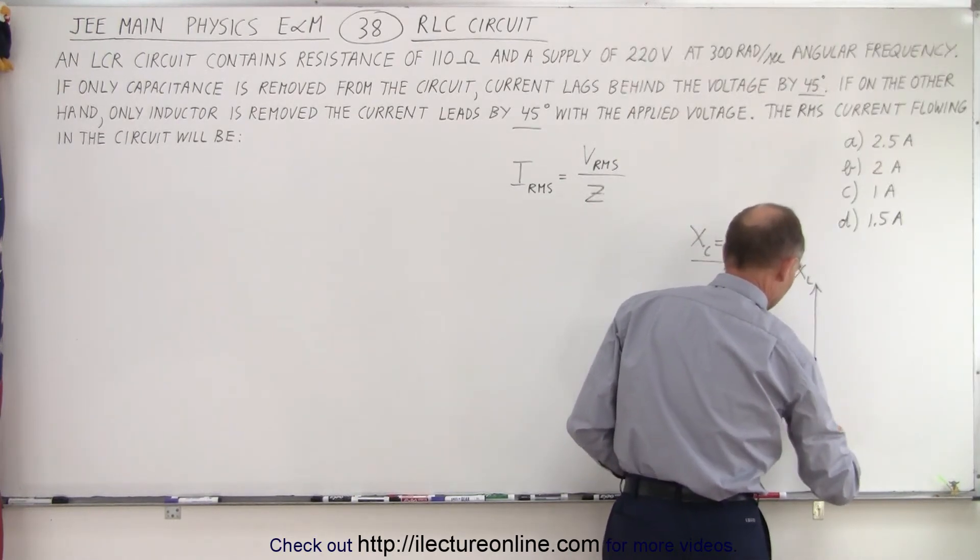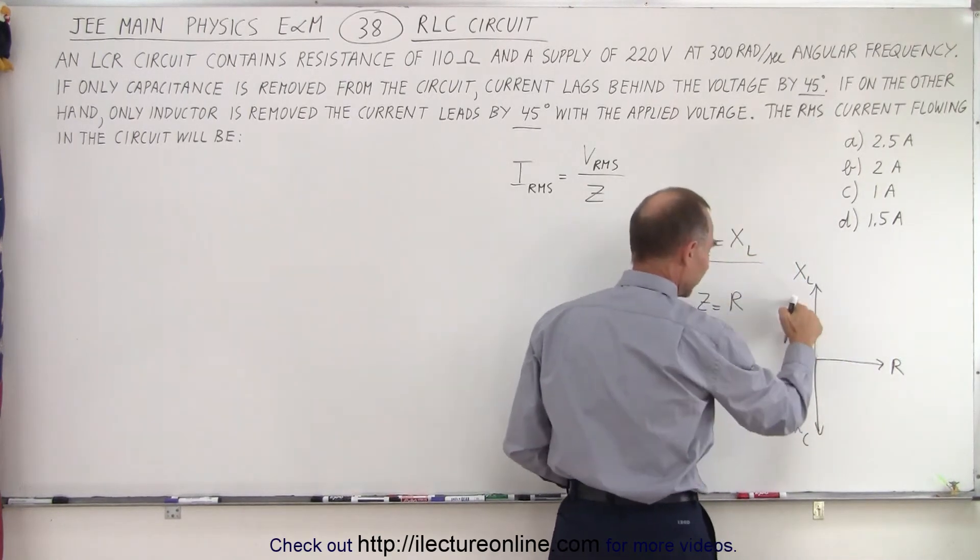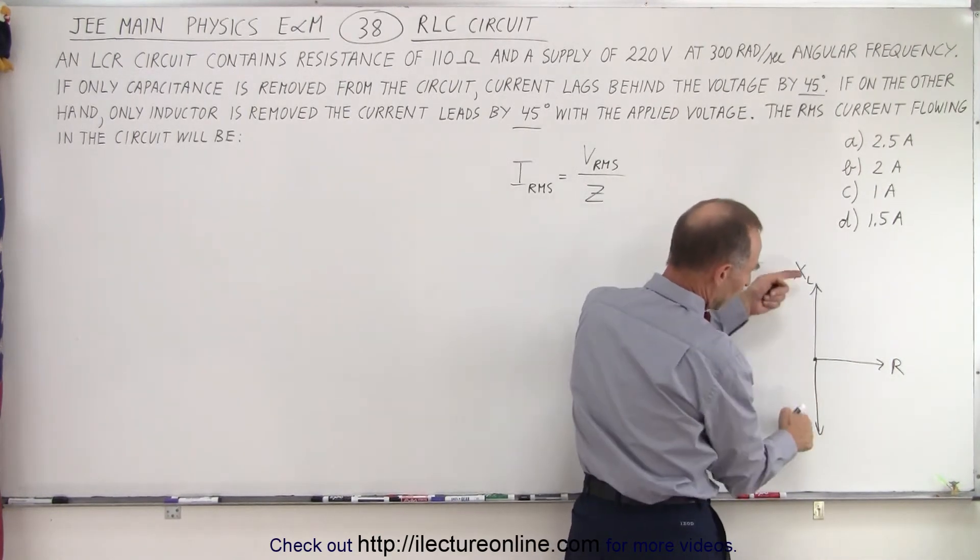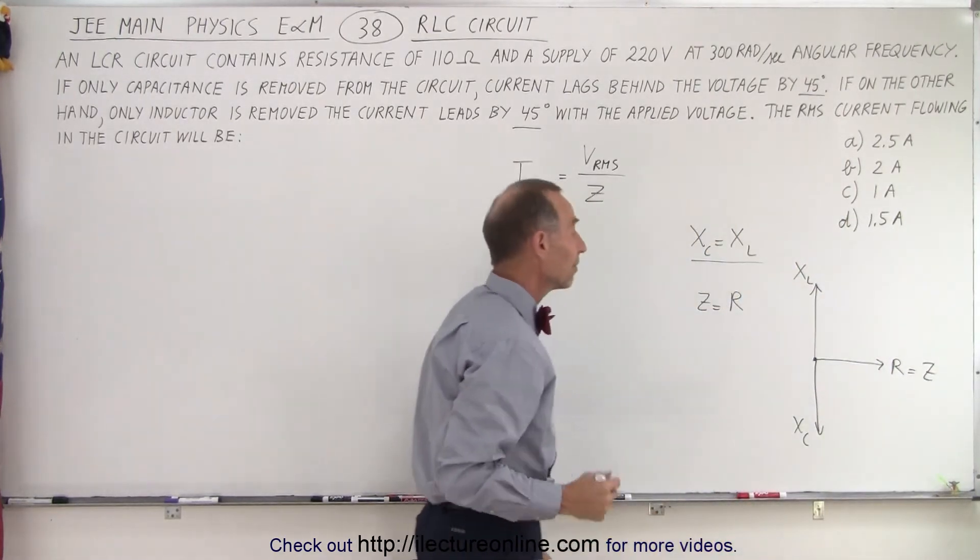you can see that in this direction, we'll get X sub L. In this direction, we'll get X sub C. In this direction, we get the resistance. But if these two are equal to each other, notice they're in opposite directions, they will cancel each other out, and therefore, the resistance equals the impedance.